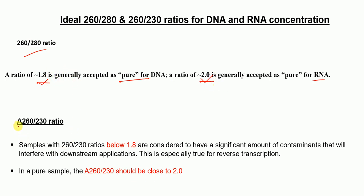When talking about the 260/230 ratio, samples with 260/230 ratios below 1.8 are considered to have significant amounts of contaminants that will interfere with downstream applications. In a pure sample, the 260/230 ratio should be close to 2 — ideally between 1.8 and 2.